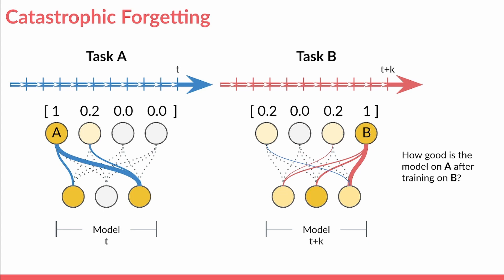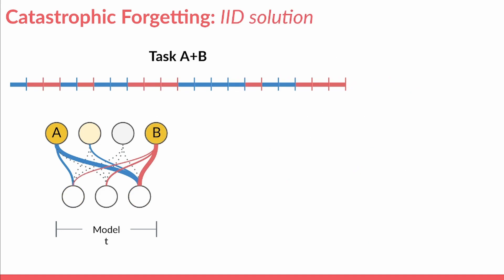Typically, this problem is overcome by breaking the temporal structure of learning with IID training, such that all inputs are equally likely to be seen at any given moment and so cannot be forgotten as such. But this method won't suffice for cases in which online sequential learning is required.